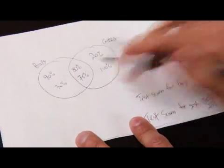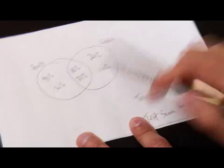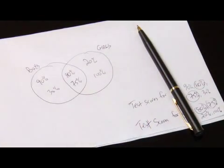So this is how we've illustrated the test scores for boys and girls by using a Venn diagram. So from this example, we're able to see how a Venn diagram works and the benefits of actually using a Venn diagram because you're able to illustrate and see differences as well as similarities with a set of numbers.